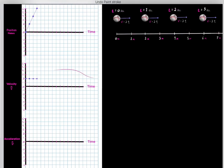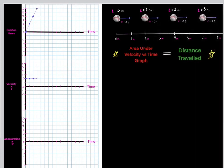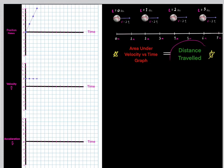We could also represent this motion using a velocity versus time graph — we learned how to do that in the previous video. Something important to realize is that the area under this velocity versus time graph tells us the distance traveled during that time interval.